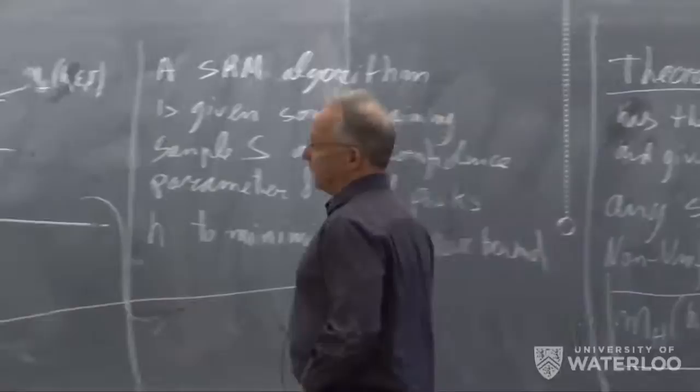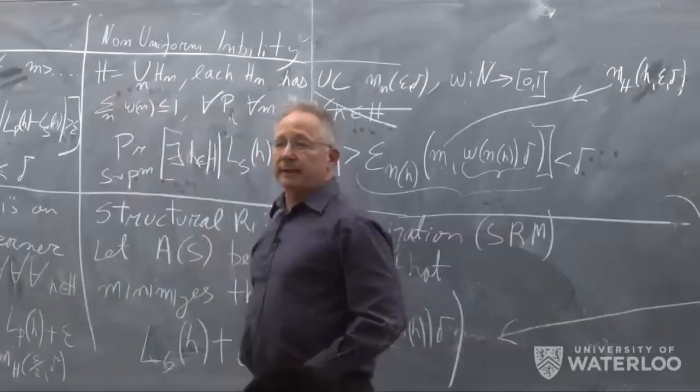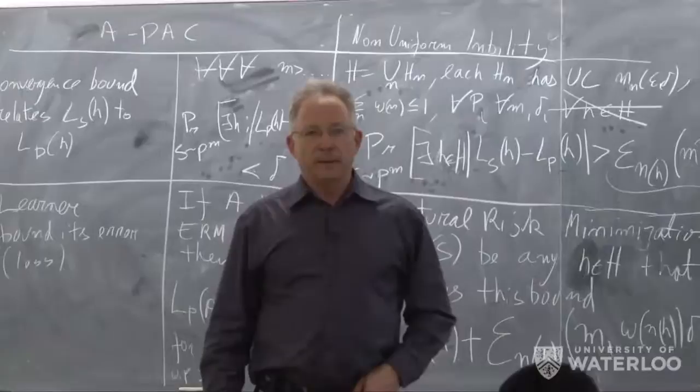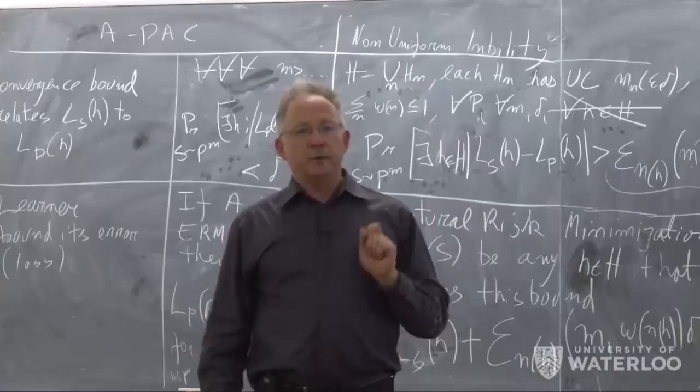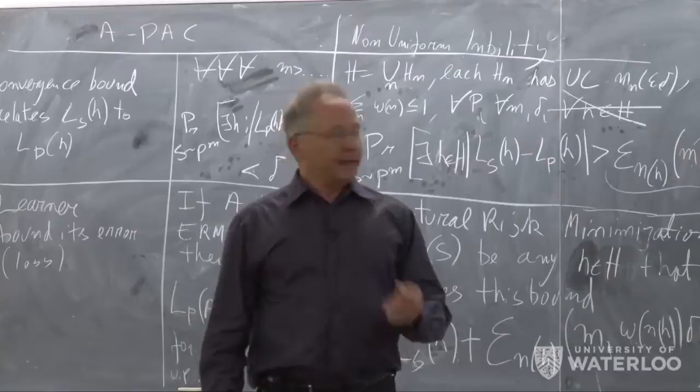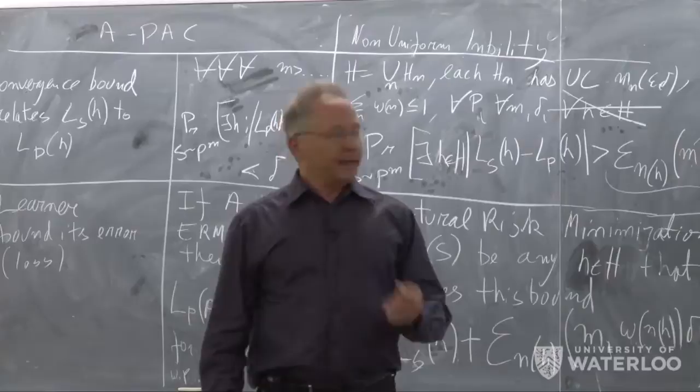This ends our proof that if a class is a union of finite VC classes, then it is non-uniformly learnable. What I want to do now in the remaining 25 minutes is to show a very concrete and natural implementation of this SRM principle.